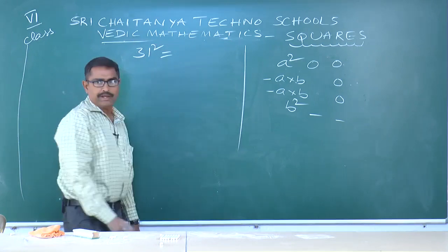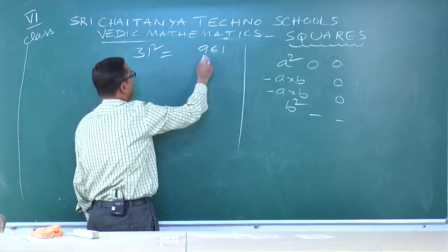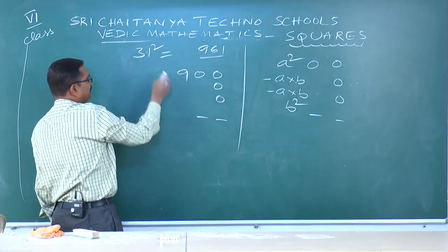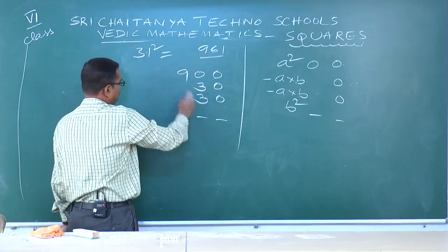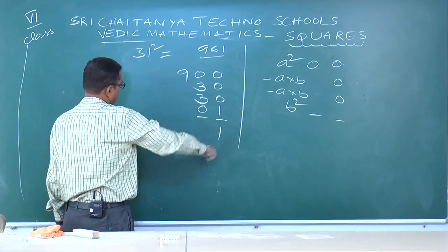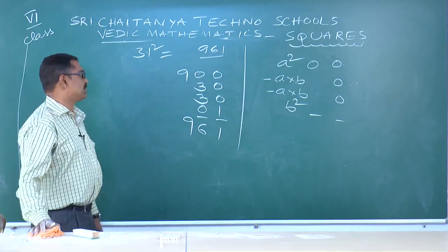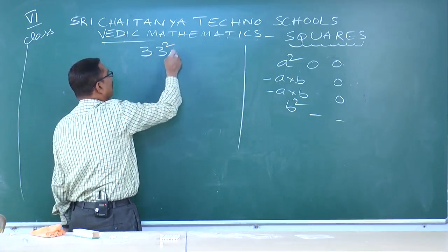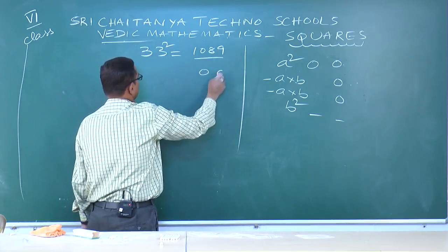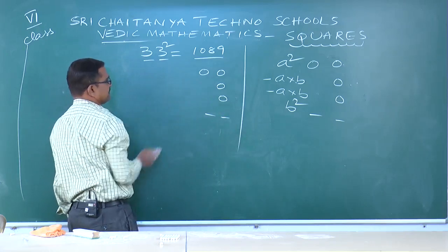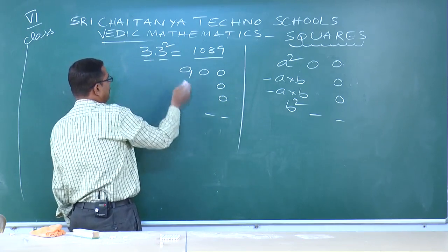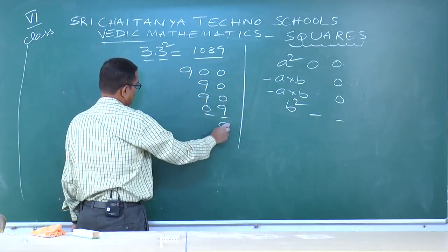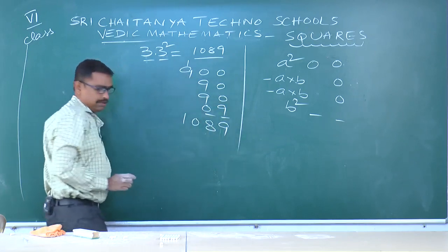Next: 31². Here a=3, b=1. a²=3²=9, a×b=3×1=3, a×b=3 again, b²=1²=1. Add: 9, 6, 1 — answer is 961. Next: 33². Here a=3, b=3. a²=9, a×b=9, a×b=9 again, b²=3²=09. Add: 9+18+10 — answer is 1089.